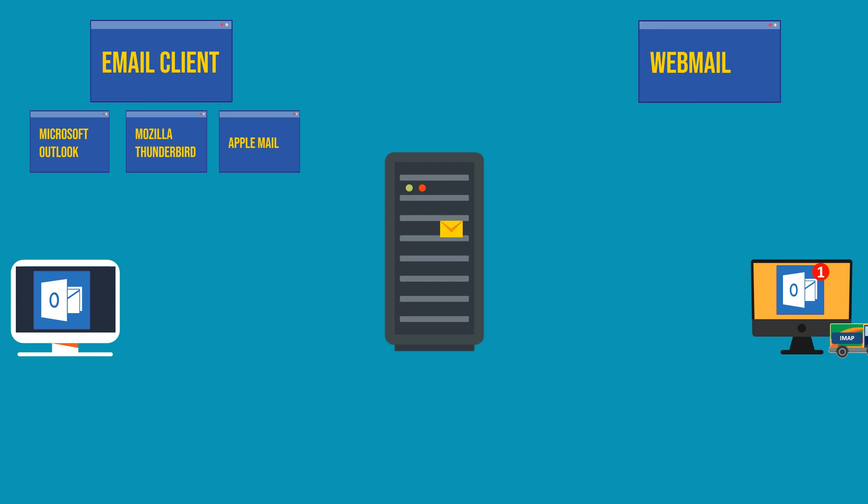Emails are usually stored locally on your device, providing quick access and the ability to read emails offline. In contrast, webmail refers to email services accessed through a web browser, like Gmail, Yahoo Mail, and Outlook.com, without requiring any software installation. When you access your Gmail account through a browser like Chrome, POP3 or IMAP is not directly utilized. The web interface uses HTTPS to establish a secure connection between your browser and Google's servers. POP3 and IMAP are typically used when you configure an email client application like Outlook or Thunderbird to access your mail account.